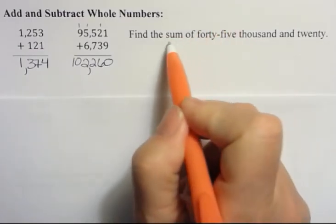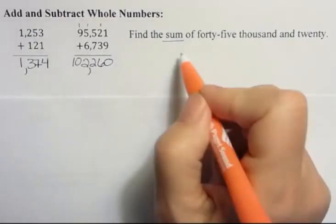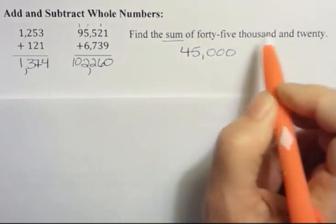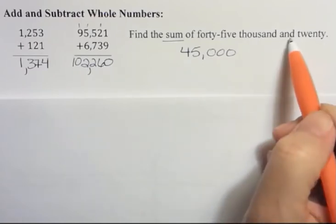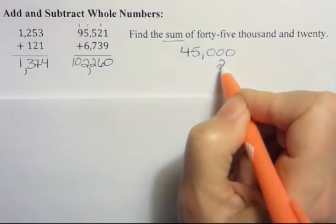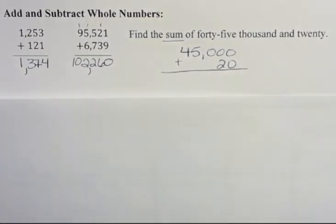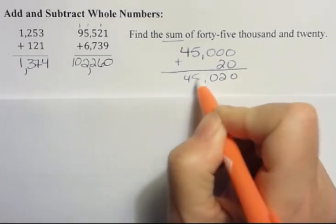If I'm asked to find the sum, as you learned in a previous video, the sum means you're going to add. So 45,000 looks like 45 and then three zeros. We have 45 in the thousands period and none in the ones period. And that separates our numbers and 20. Well, 20 just would go here. So we have to make sure that we line up those numbers according to their place value. Then I would just add those together. And I don't have anything to carry here. I'm just adding straight down.